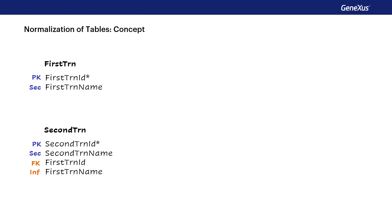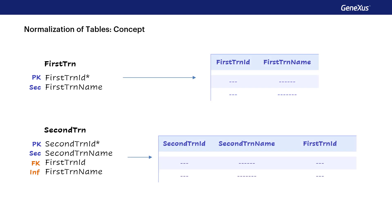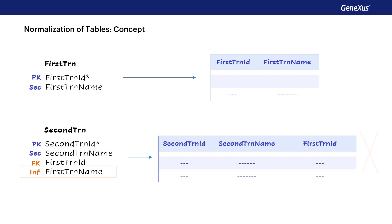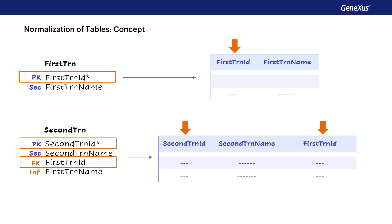Let's start with the concept of a normalized database. What does it mean? It means that there are no duplicated data, no redundancies. Secondary attributes are present in a single table, inferred attributes are not stored, and the only attributes that can be included in more than one table are primary keys, since they also appear as foreign keys in other tables.